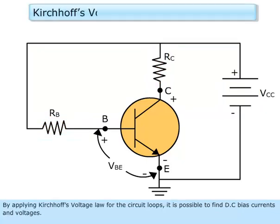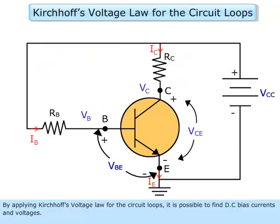By applying Kirchhoff's voltage law for the circuit loops, it is possible to find DC bias currents and voltages.